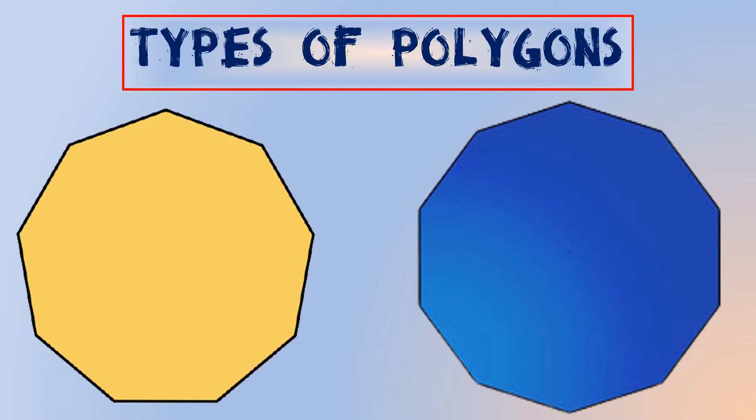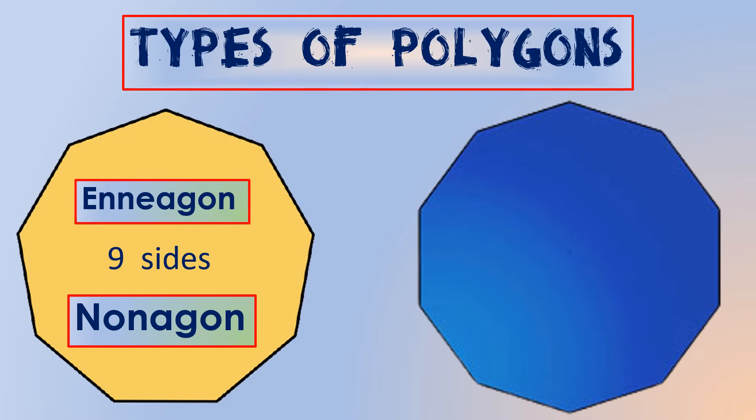We call a nine-sided polygon an enneagon, or widely known as nonagon.